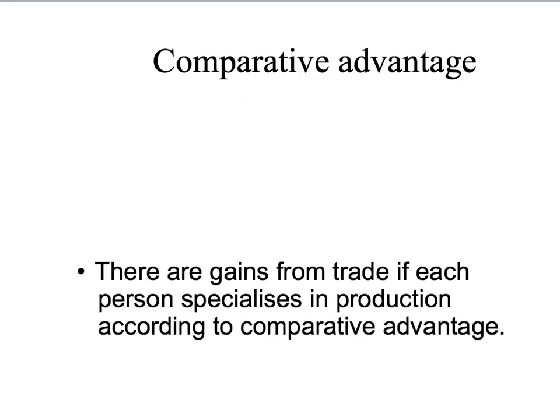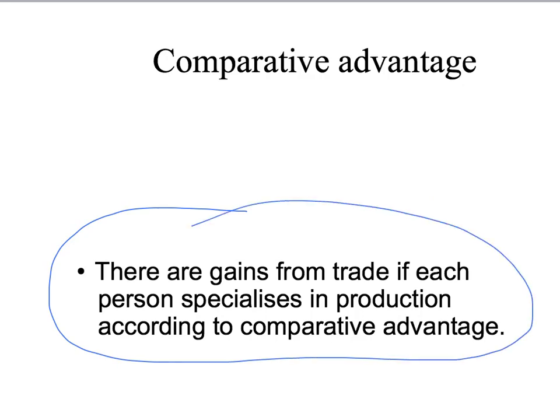Our claim is that there are gains from trade if each person specialises in production according to their comparative advantage. So Tom and Becky can gain through specialisation and trade, even though Becky has an absolute advantage in everything — she doesn't have a comparative advantage in everything. Tom has a comparative advantage in tomatoes, so if he specialises in tomatoes while Becky specialises in potatoes, they can trade and both be better off.